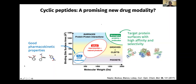In the middle is where cyclic peptides sit. People found out that there are these macrocycles and natural products found in nature, made by, for example, fungi and bacteria. Some of these cyclic peptides can actually target large protein surfaces, and they can also be membrane permeable and orally bioavailable at the same time. Perhaps this is a category of molecules that has the best attributes of both worlds.